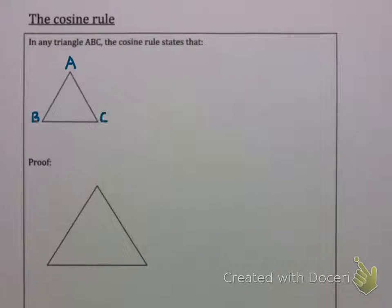First of all, what does the cos rule say? Well, if you have any triangle ABC, and I've labelled in side A, side B, and side C, all opposite their angles.